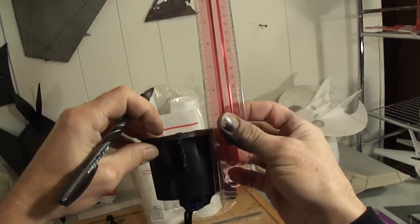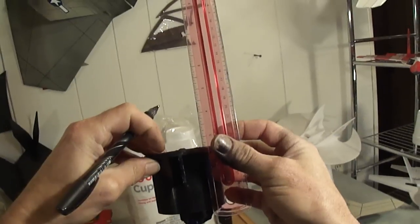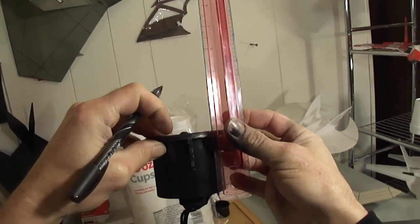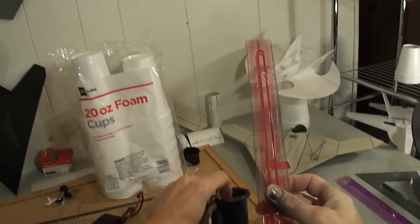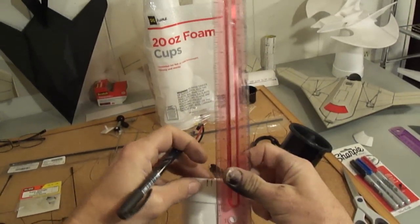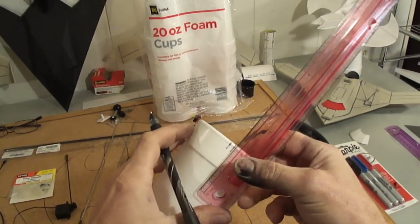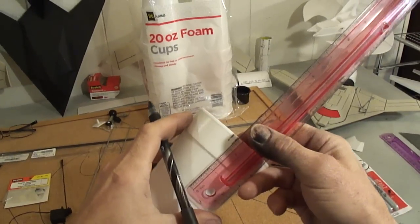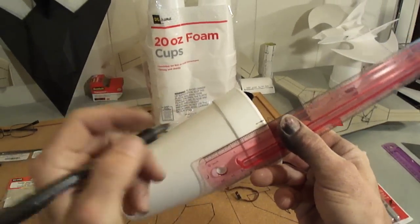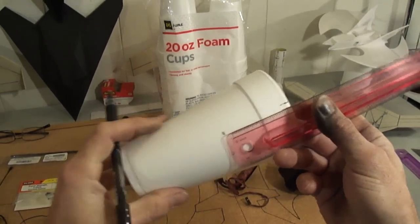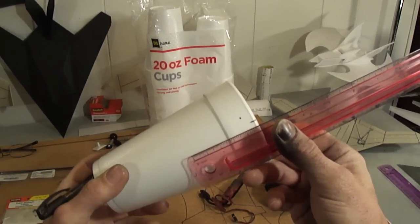Now if you take and measure this EDF unit from front to back, it's 2 1/2 inches. So I'll go ahead and put this ruler up here. Set it at 2 1/2 inches, mark down here at the bottom. Go ahead and do the other side.